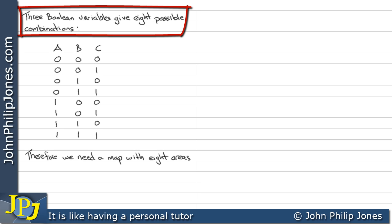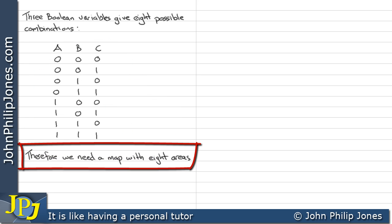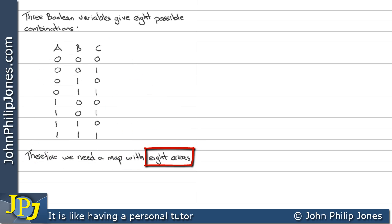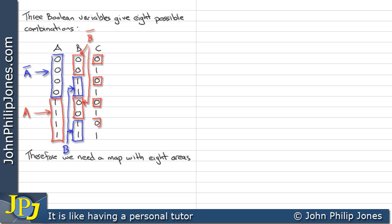3 Boolean variables give 8 possible combinations, therefore we need a map with 8 areas. These 4 zeros represent not A, these 4 ones represent A. These 2 and these 2 making 4 represent not B, these 2 ones and these 2 ones represent B. Then we have 4 zeros representing not C, and finally 4 ones underneath C representing C.